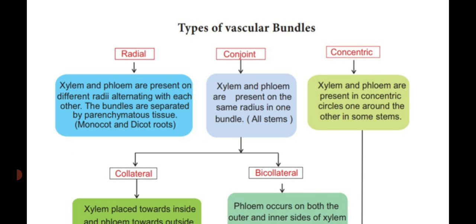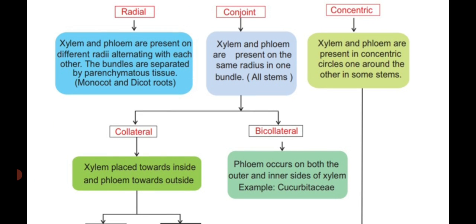Another type is the conjoined vascular bundle, where xylem and phloem are present on the same radii in one bundle. Example: all stems. This conjoined vascular bundle is again divided into two types: collateral and bicollateral. In the collateral vascular bundle, xylem and phloem are arranged on the same radii, but the phloem faces the outer side — that is called collateral — while xylem is placed towards the inner side.